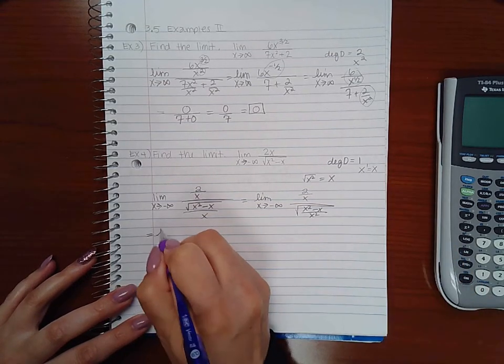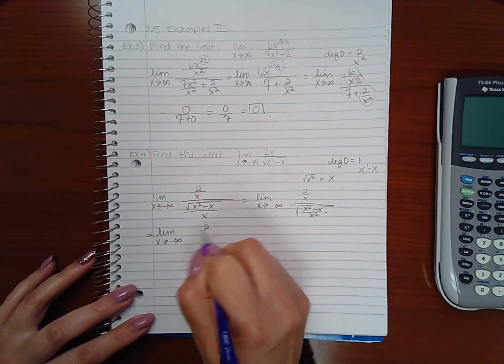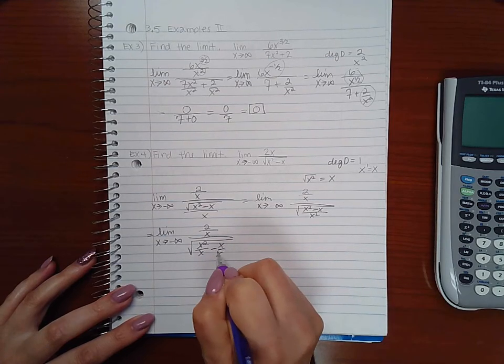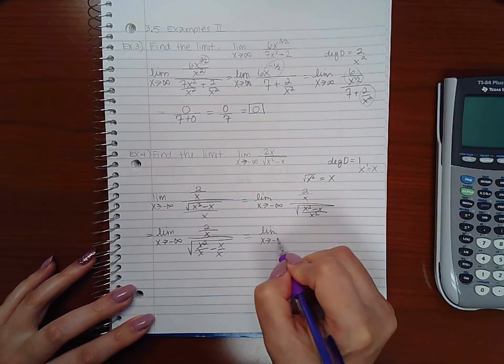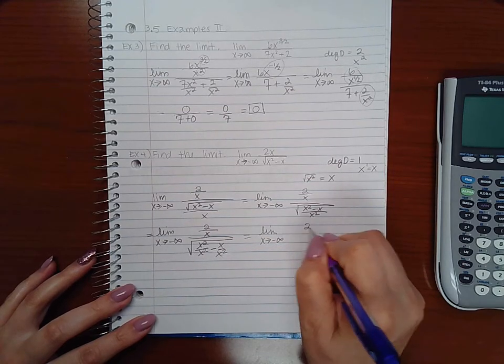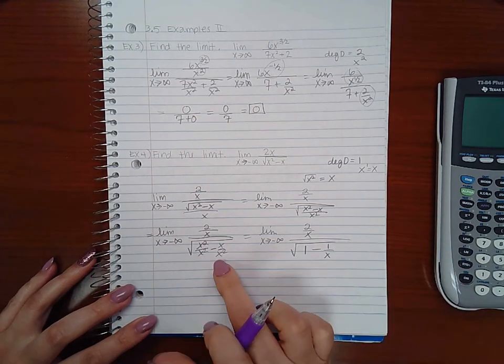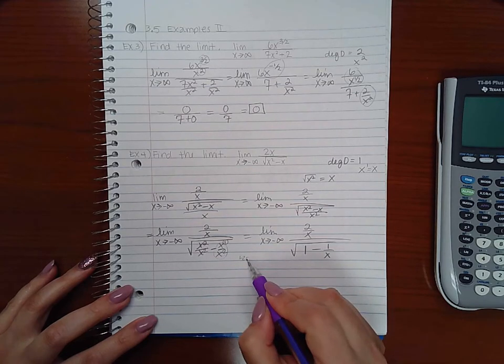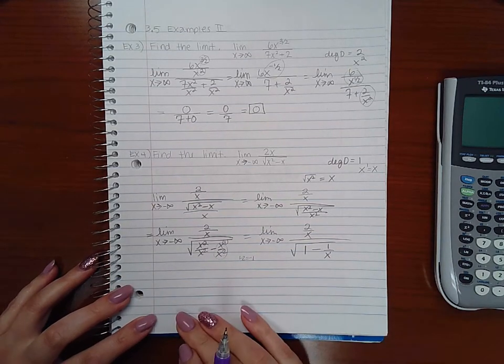Then you can further simplify the denominator by separating it into two fractions. So you get 1 minus 1 over x if you reduce these. This would be top exponent, which is a 1 minus 2, which is a negative 1, and a negative 1 exponent means there's an x to the 1 in the denominator.